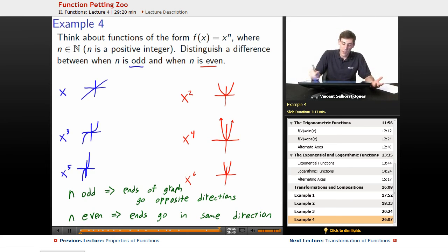So n is odd. If n is odd, we have opposite directions. If n is even, we have same direction. All right, great.